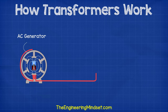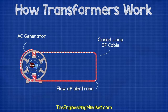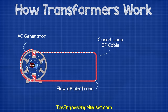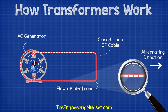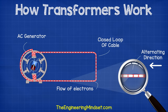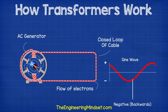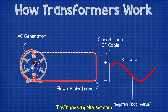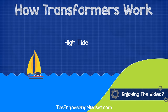When we connect an AC generator to a closed loop of cable, a current will be able to flow through this cable and the direction of the current will alternate backwards and forwards with the rotation of the generator. The alternation means that the current reaches its maximum and minimum point during the cycle, which gives it its sine wave pattern when connected to an oscilloscope. You can think of this as the tide of the sea as it changes direction and reaches its maximum and minimum point.